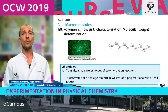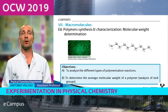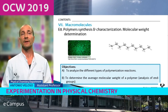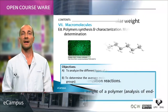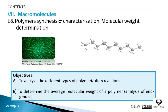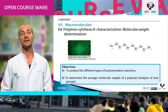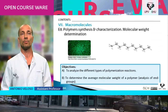The seventh and last lesson is about macromolecules. The experiment is entitled Polymer Synthesis and Characterization, and we are also going to characterize the molecular weight of our polymer. We have two objectives: to analyze the different types of polymerization reactions, and to determine the average molecular weight of a polymer and the end-groups of these polymers.